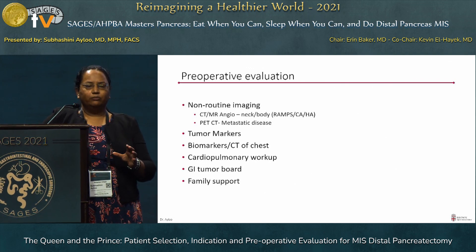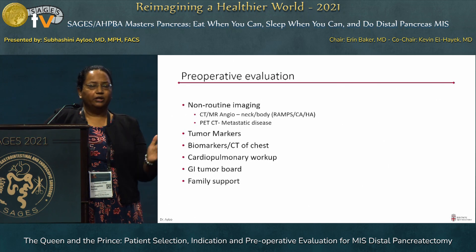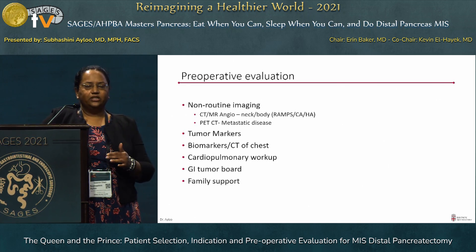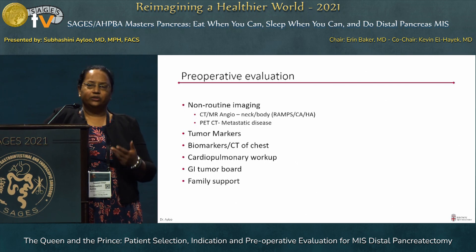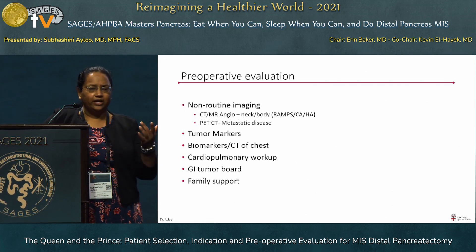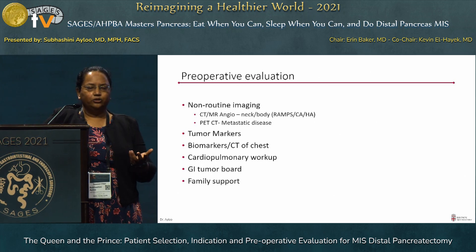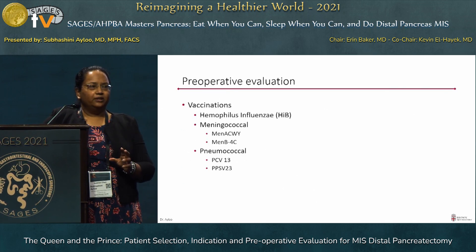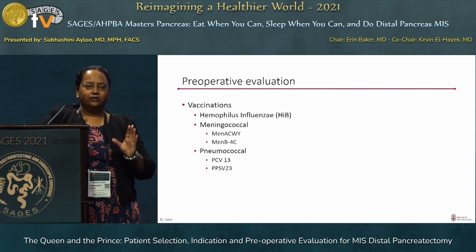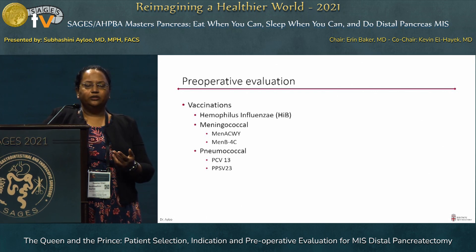Non-routine but still performed imaging includes CT/MR angiography, more relevant for proximal tumors where vascular involvement is suspected or when a metastatic lesion is being evaluated. Routine oncological workup includes tumor markers, biomarkers, and staging CT of the chest, along with assessment of the patient's cardiopulmonary status. In our center, these cases are discussed in the GI tumor board. Family support is also assessed. Importantly, if splenectomy is planned along with distal pancreatectomy, vaccinations should be considered — with a booster at approximately eight weeks, especially for meningococcal and pneumococcal vaccines.